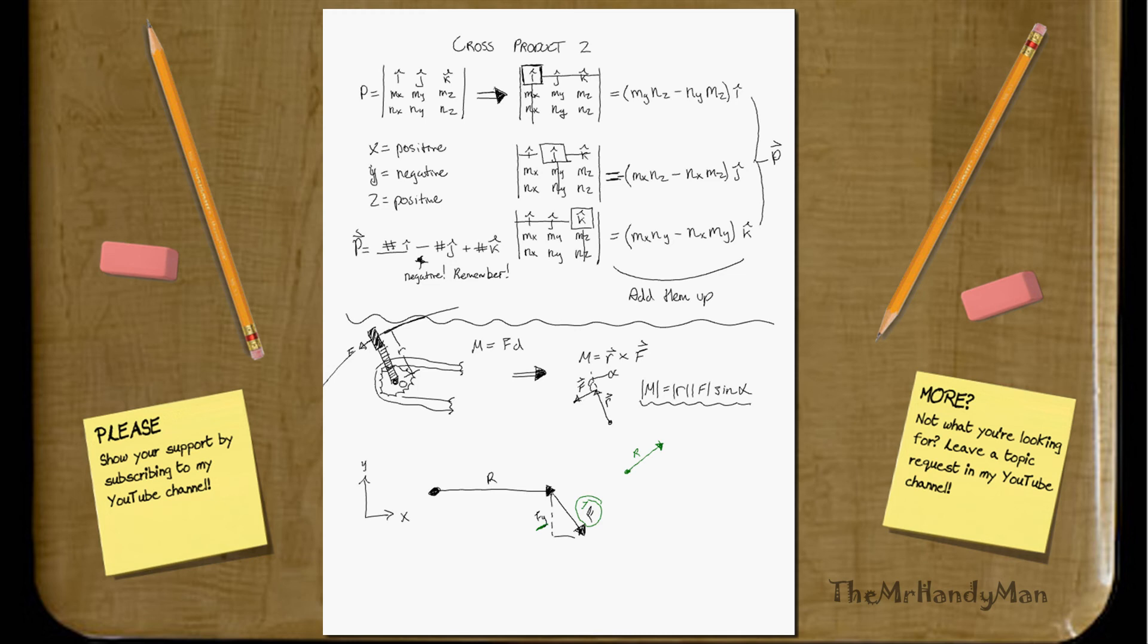What portion would contribute into the moment? Well, if we had a vector like this, what portion would actually contribute?